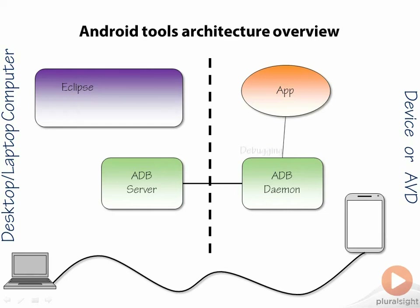When you want to debug the application, the debug interaction with the processor and app happens on the device from the ADB daemon. That communicates through the pipeline and connects you up to Eclipse. The actual Java-based debugging uses a standard protocol called the Java Debug Wire Protocol, which allows Eclipse to easily work with it for debugging.